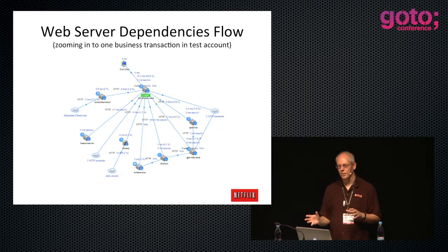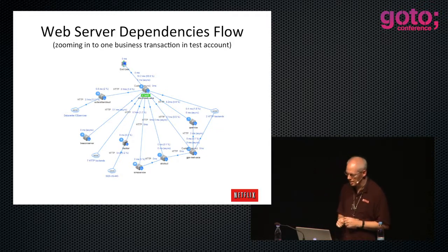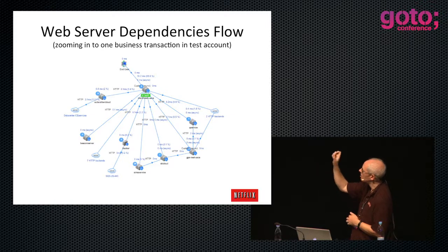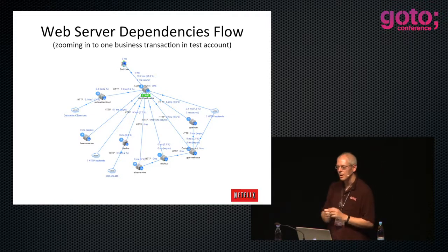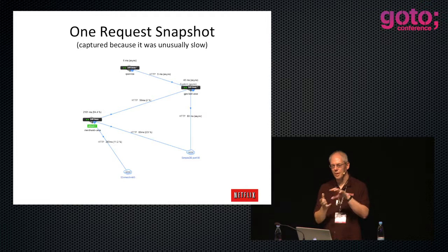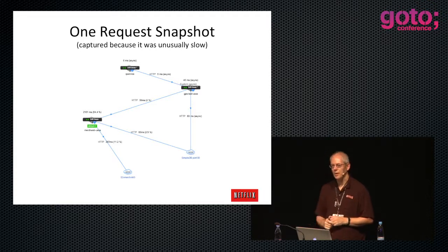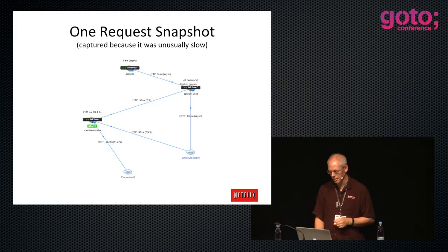What you really care about is a single request. AppDynamics captures single requests - if it sees something slow, it grabs it. I can click in on any of these little boxes and it gives me the stack trace of the code and exactly what HTTP or SQL or memcached request it made. So you get all the code and you can see what's going on.